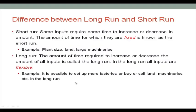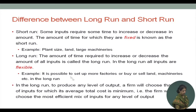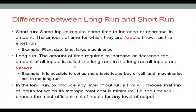In the long run it is possible to set up more factories or buy or sell land, machineries, and so on. In the long run, to produce any level of output a firm will choose that mix of inputs for which its average total cost is minimum — that is, the firm will choose the most efficient mix of inputs for any level of output.